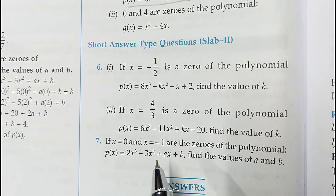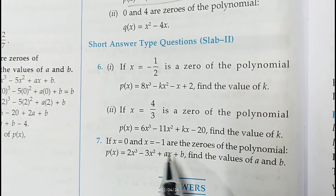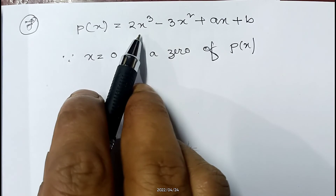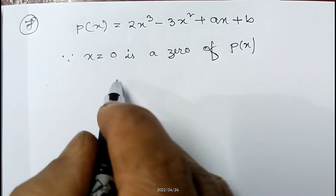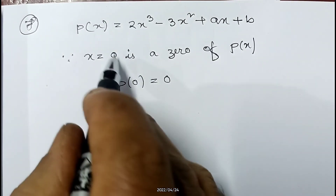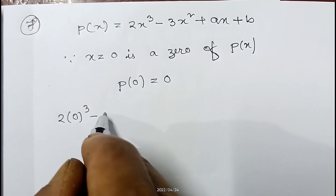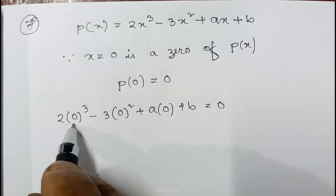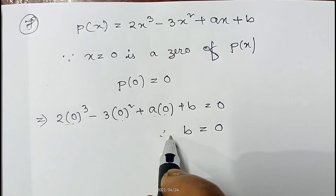Question 7: if x = 0 and x = minus 1 are zeros of p(x) = 2x³ minus 3x² plus ax plus b, find the values of a and b. Since x = 0 is a zero, p(0) = 0. Replacing x by 0: 2(0)³ minus 3(0)² plus a(0) plus b = 0. All terms with x become zero, so b = 0. Therefore the required value of b is 0.